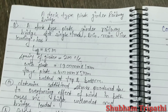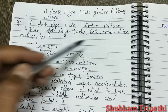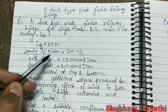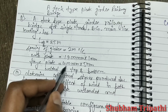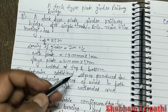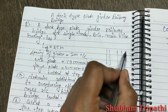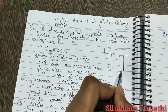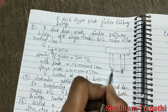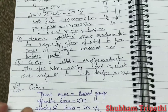Hello everyone, today we will design a deck type plate girder railway bridge for loaded and unloaded conditions. The given problem is a deck type plate girder railway bridge for single track broad gauge mainline loading with an effective span of 25 meters. The spacing of girders is 2 meters center to center, web plate is 1900 mm × 10 mm, and flange plate is 400 mm × 50 mm welded at top and bottom.